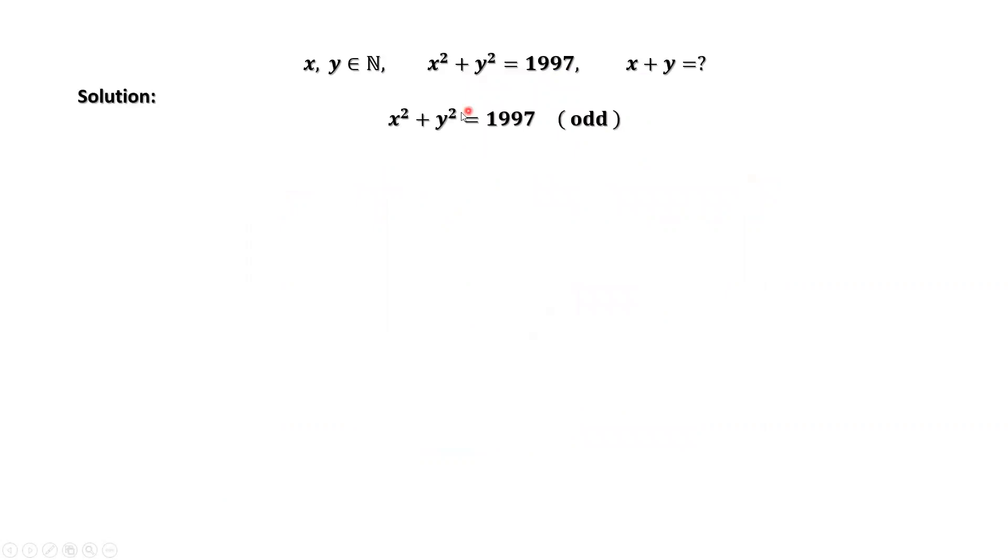This is the given condition, x squared plus y squared equals 1997. 1997 is an odd number. This implies one of x and y is odd, and the other is even. Odd plus even equals odd. By symmetry of x and y, we assume x is odd, y is even.